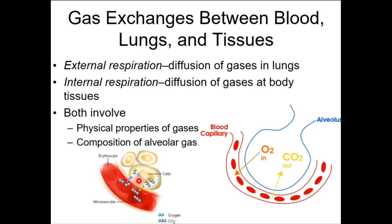A student asks about the diagram: the arrows represent oxygen and carbon dioxide respectively. The carbon dioxide is going from the cell into the bloodstream, because that deoxygenated blood stream will carry it back.